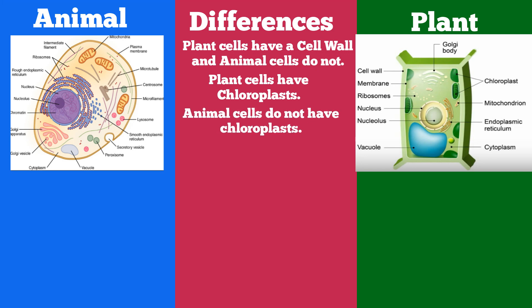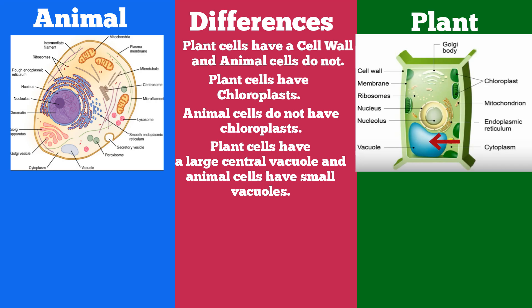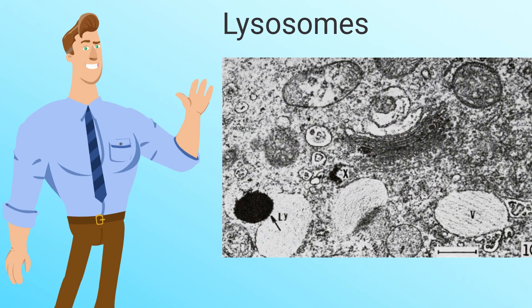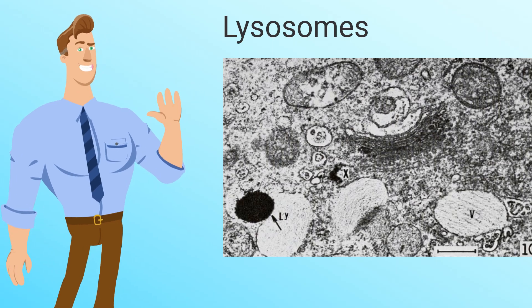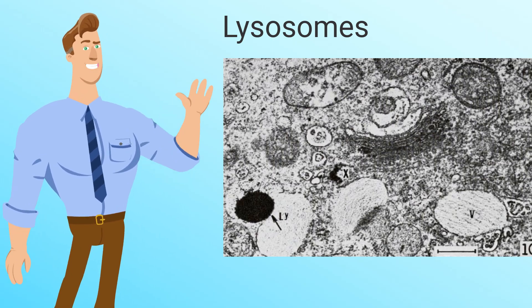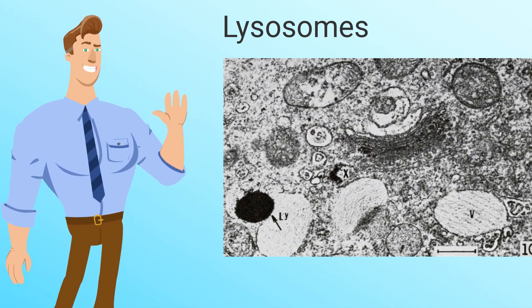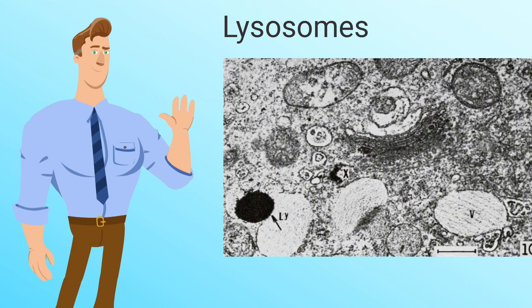Animal cells do not have chloroplasts. Plant cells have a large central vacuole compared to animal cells that contain smaller vacuoles. Plant cells do not have lysosomes, but animal cells do. Lysosomes help animals break down large molecules, old cell parts, and sometimes large macromolecules that get past the cell membrane. The cell wall of a plant cell keeps many of these large molecules out, and plant cells have special vacuoles that perform a similar function to what lysosomes do in animals.